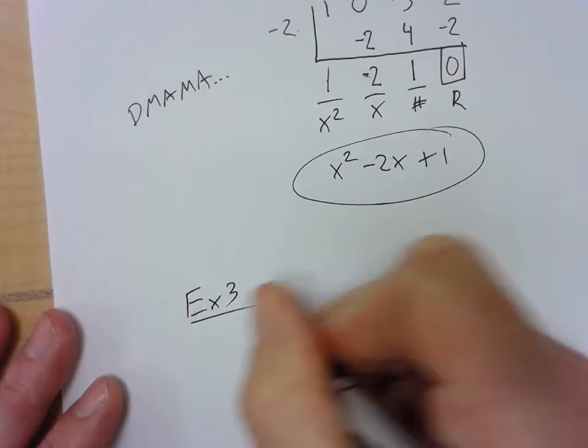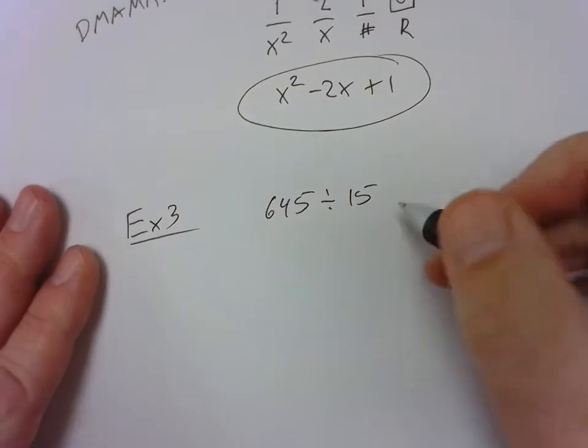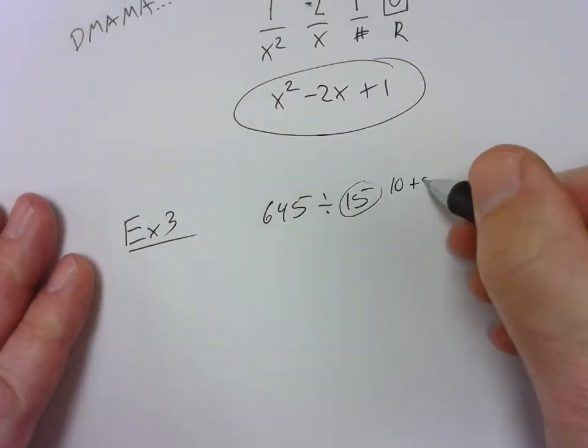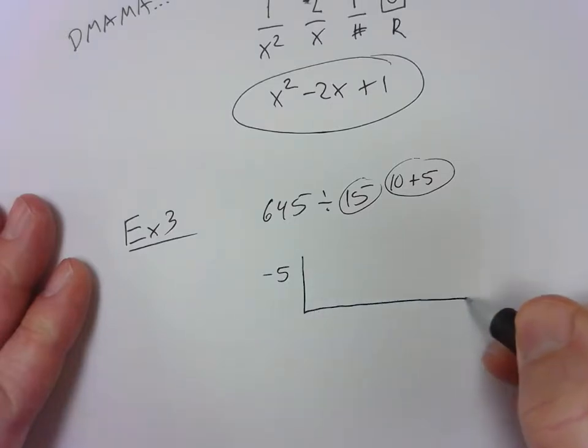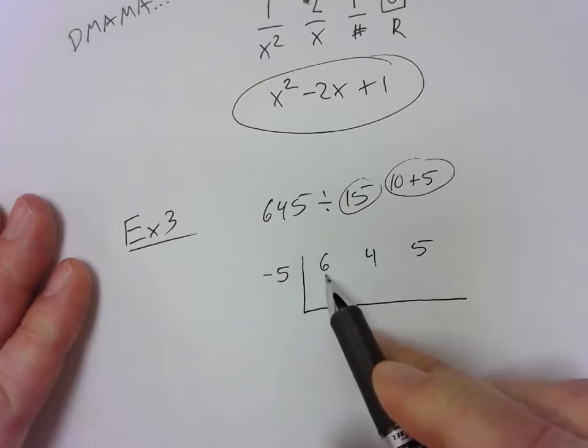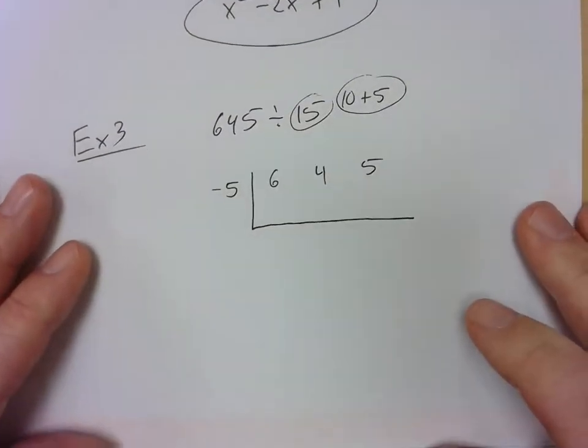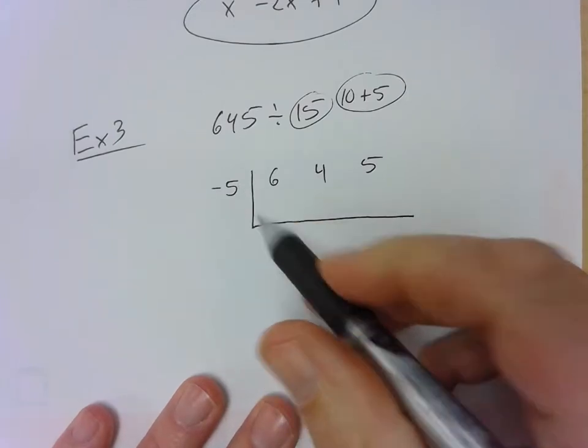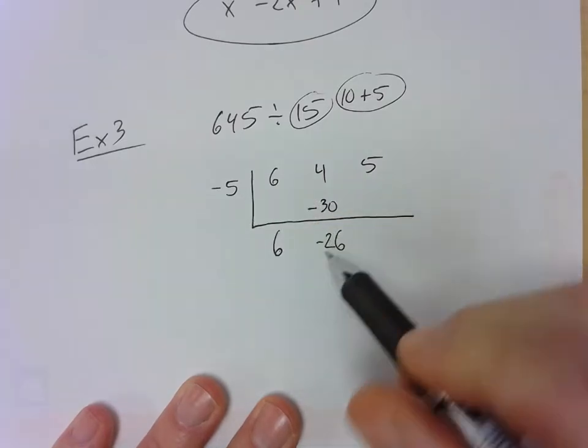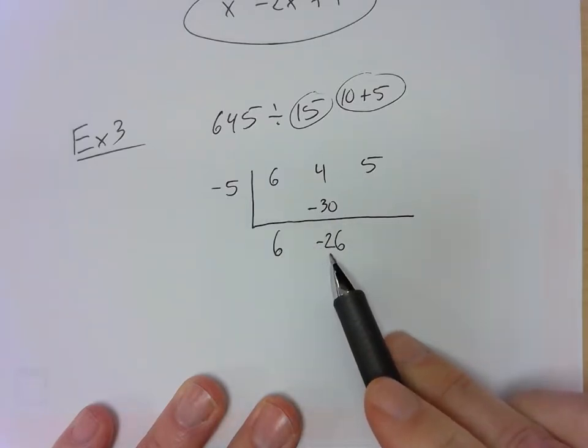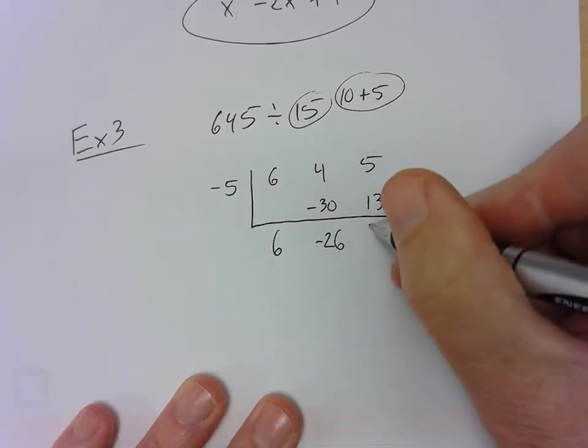So, example 3. We're going to do 645 divided by 15. We know the answer is 43. I'm going to think about this 15 as 10 plus 5. So, that's kind of like the x, like x plus 5. So, I'm going to switch the sign, make it negative 5. I'm going to write down 6, 4, and 5. So, that we know that that's the hundreds, the tens, and the ones place. I'm then going to do the process of synthetic division. I drop the 6 down. I multiply. I get negative 30. I add these together. I get negative 26. I multiply these together. So 5 times 20 is 100. And then 5 times 6 would be 30. And a negative times a negative is positive. So, positive 130. I add the 5 to it. I box it in. I get 135.